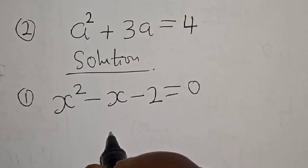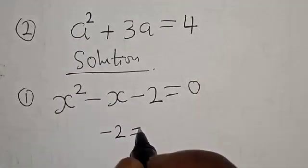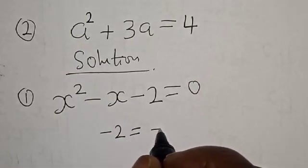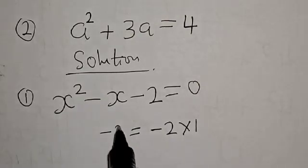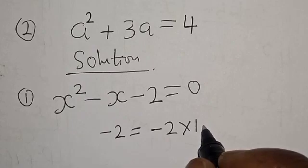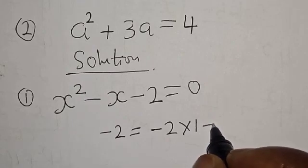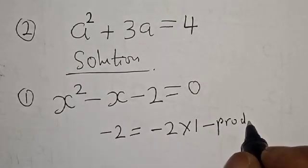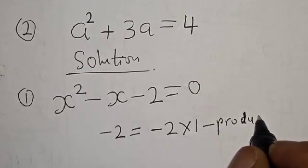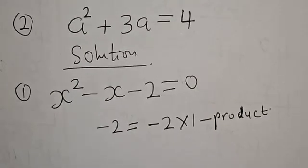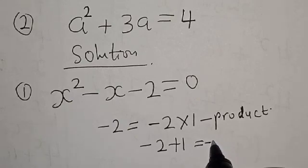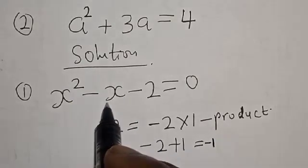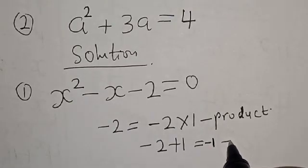Now let's see. Minus 2 is equal to minus 2 times 1. That is the product. And if you have minus 2 plus 1, this gives you minus 1, which is the coefficient of x. That is the sum.